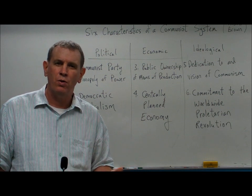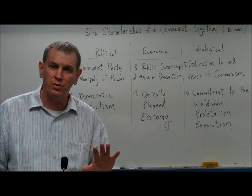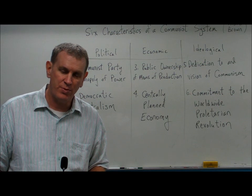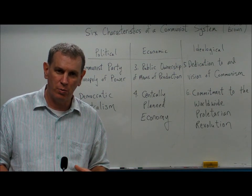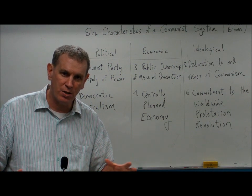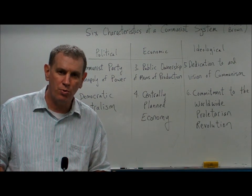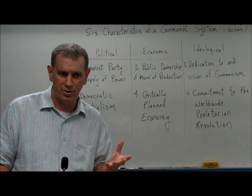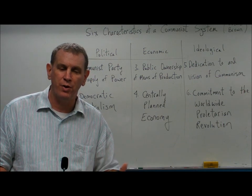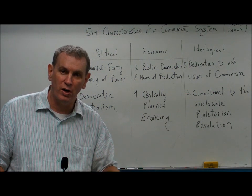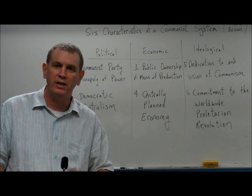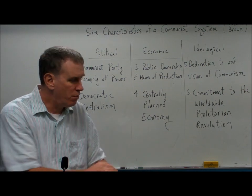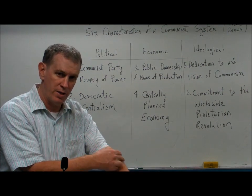Stalin was at different times more or less attached to the idea of a worldwide communist system. As discussed, Stalin saw the world in concentric circles moving outward from Moscow. He was very much committed to communist systems in Eastern Europe and in buffer states around the Soviet Union, largely because he wanted those countries to be friendly to socialism, as he was worried about the aggressive nature of the capitalist states. Those are the six characteristics — or as Archie Brown says, the six defining features of a communist system.